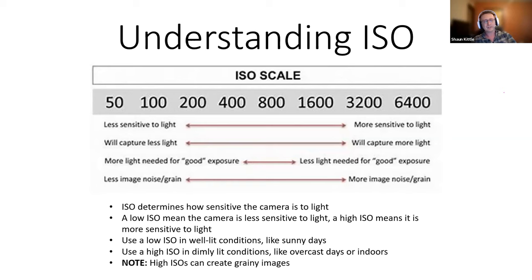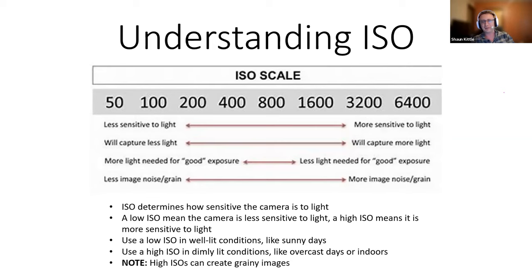For bright sunny conditions, start with ISO around 50 or 100. On a rainy day or in the woods with a canopy, shoot around 800. Indoors, start at 1600. I've covered a lot of board meetings in dark rooms and often had to crank it to 3200, dealing with a little grain — sometimes you just have to.